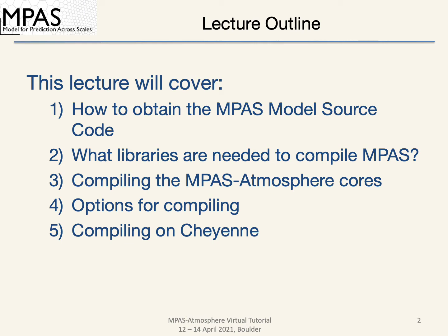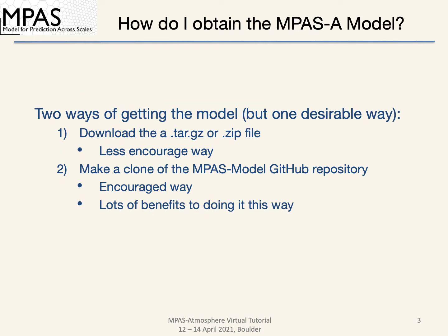Furthermore, it will cover the prerequisite libraries that are needed to compile MPAS and go over options one can use when compiling. There are two ways of obtaining the model source code. The first involves downloading a tar file of an MPAS release, and the second is to clone the MPAS model repository using Git. Both ways allow you to obtain the code; however, the second way comes with many benefits that the first does not.